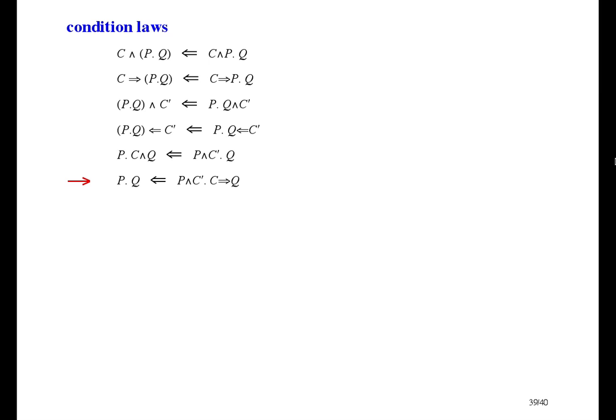And the last one, on the left, we have a dependent composition. Behave according to p and then according to q. The law says, if we want, we can do more than p to start with. We can do p and c prime. And then we have an easier time after, because we can assume c when doing q.